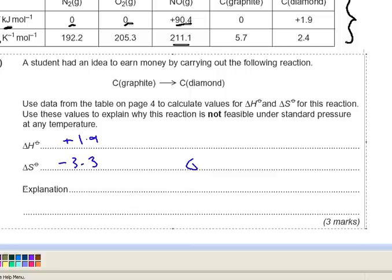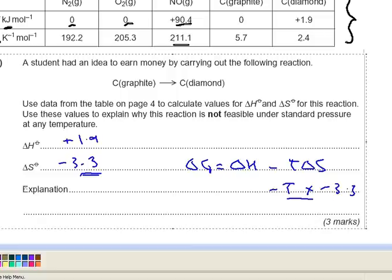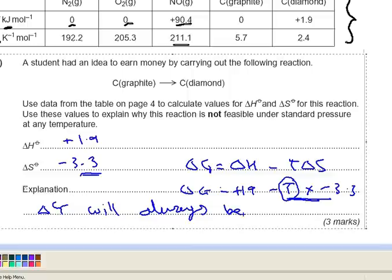As I said, because the formula is delta G equals delta H minus T delta S, and we have minus T times a negative delta S of minus 3.3, that part of the expression is always positive. Delta H is positive 1.9, so delta G, no matter how big the temperature gets, is always going to be a positive answer. The explanation is: delta G will always be positive.